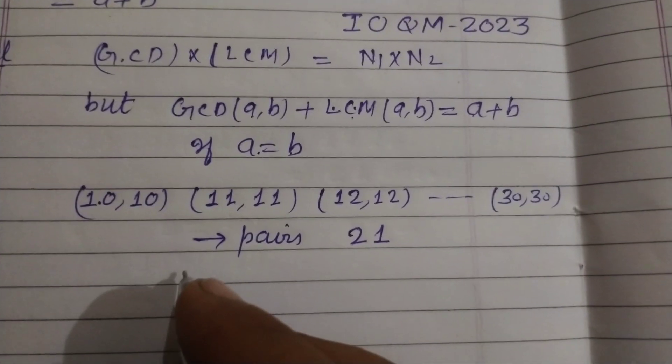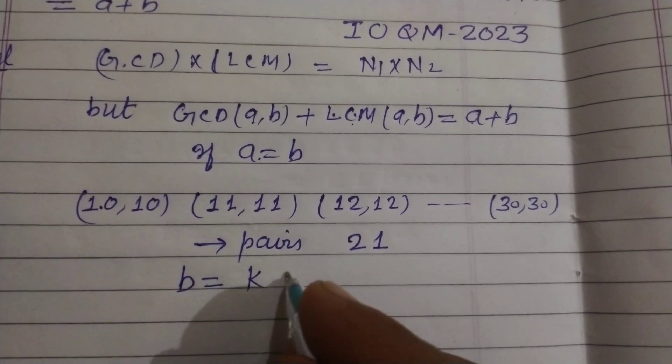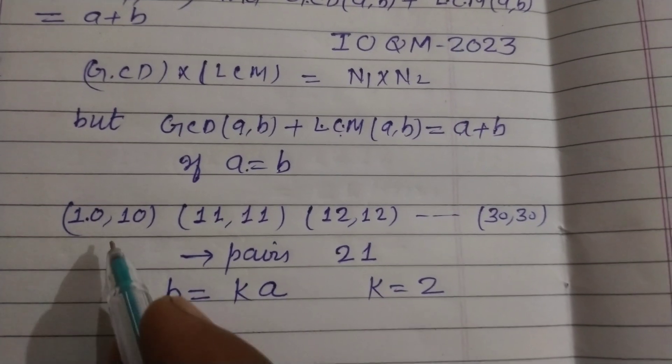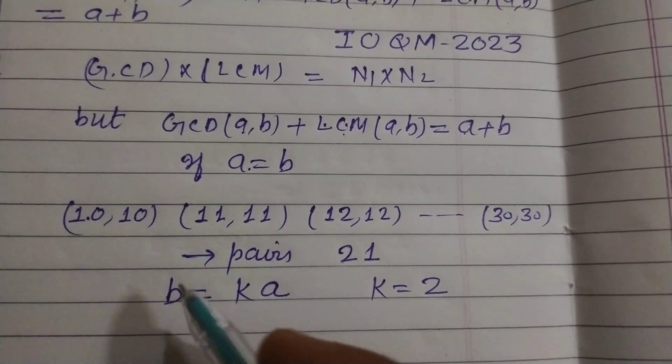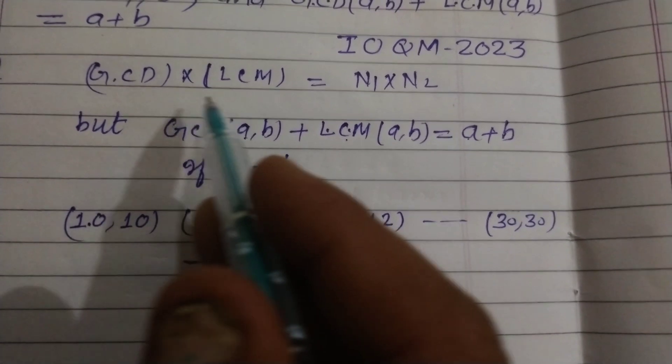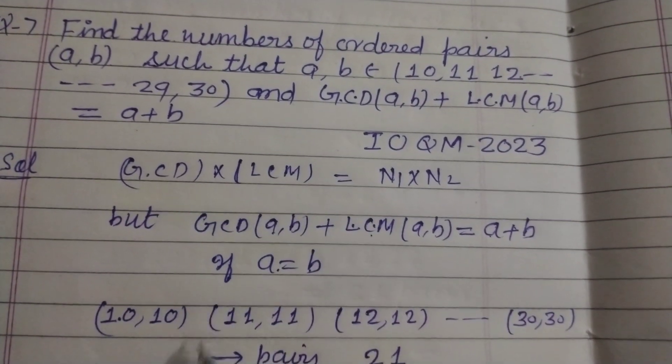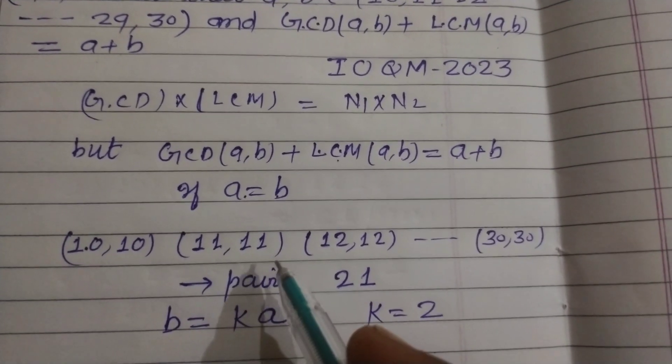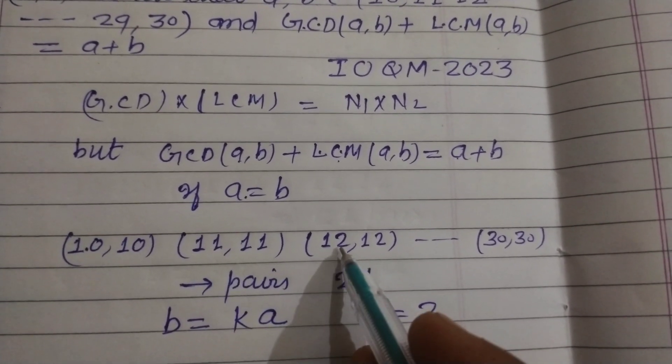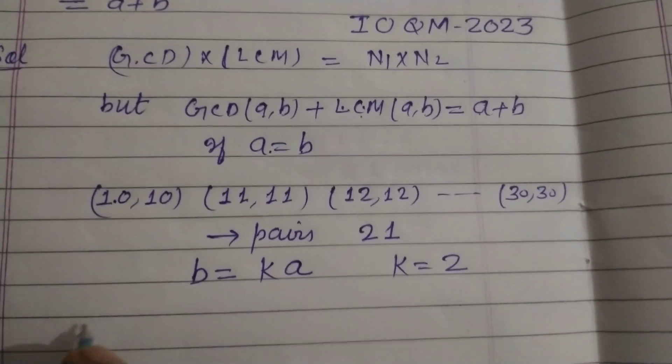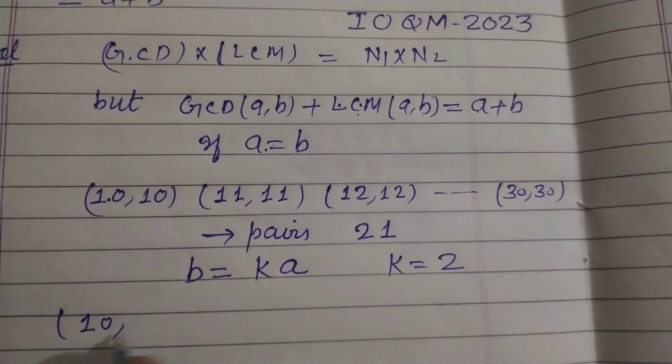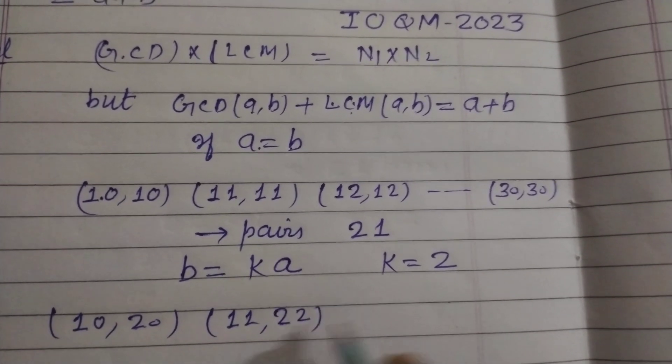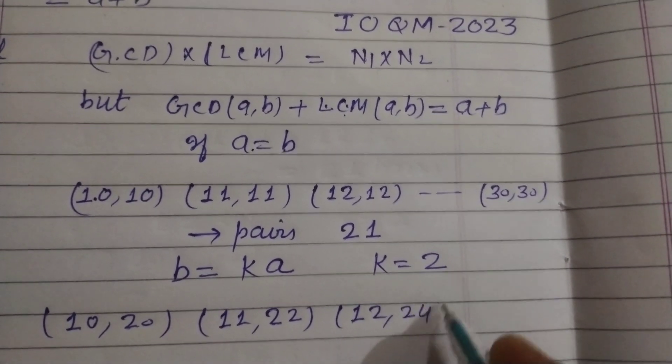Now we take b equal to k times a, where k is 2, because numbers can be doubled in this set. 10's double is 20, 11's double is 22, 12's double is 24. So we make such pairs like (10, 20), (11, 22), (12, 24), and (13, 26).